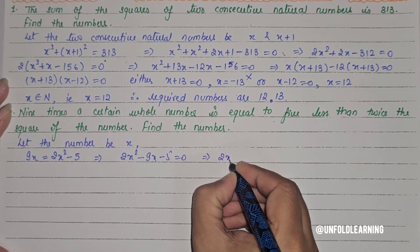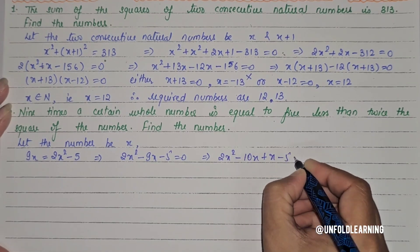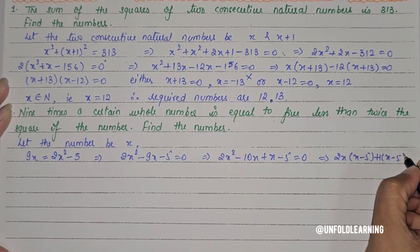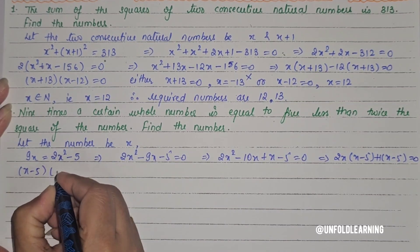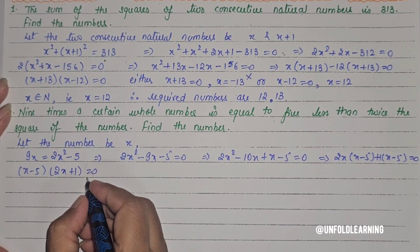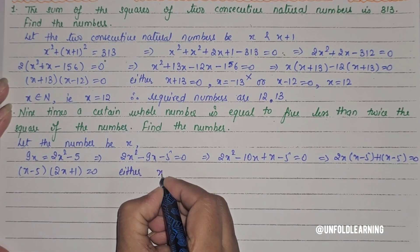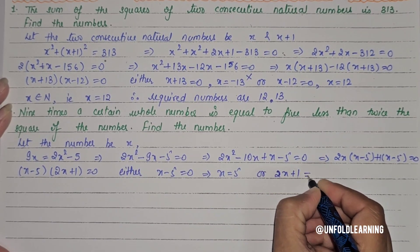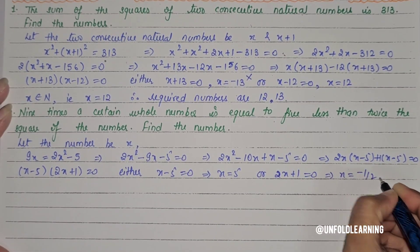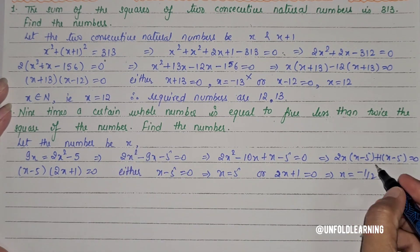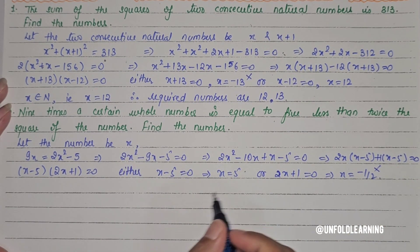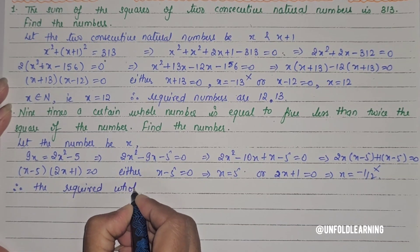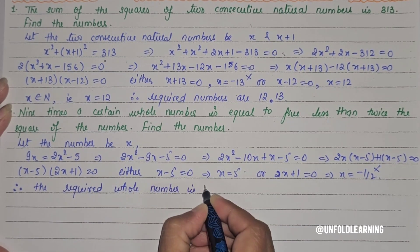We factor 2x² − 10x + x − 5 = 0. Taking 2x common: 2x(x − 5) + 1(x − 5) = 0, so (x − 5)(2x + 1) = 0. Either x − 5 = 0 giving x = 5, or 2x + 1 = 0 giving x = −1/2. Since the answer must be a whole number, we reject −1/2. Therefore the required whole number is 5.